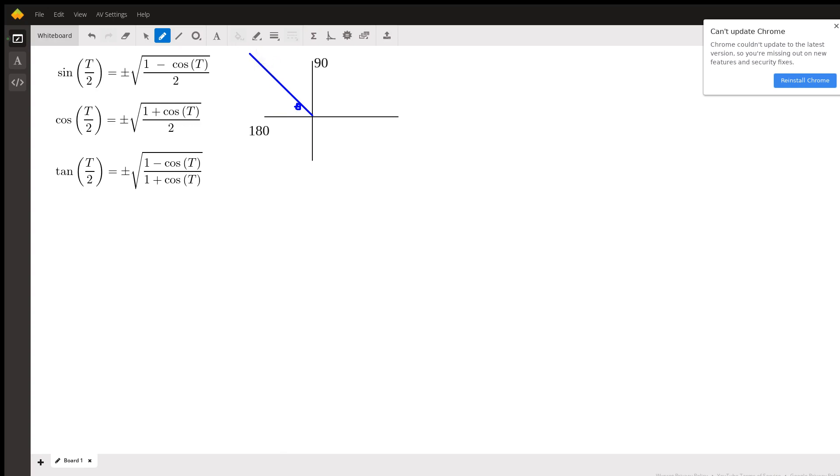And we always make a triangle. You always drop it from the terminal side to the x-axis, always the x-axis. So you have a right triangle here.